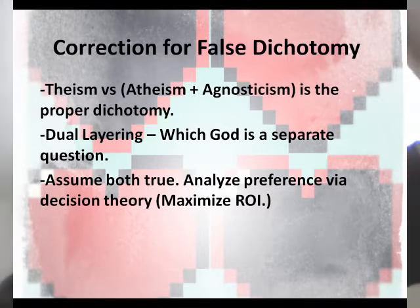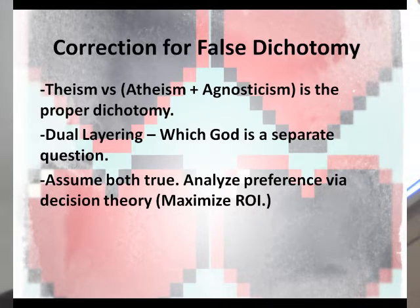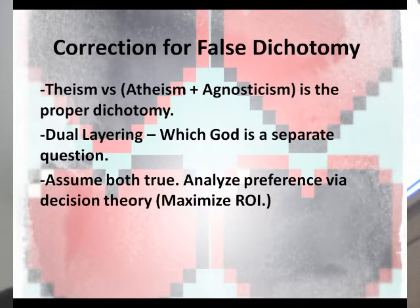The way I'm going to address this is with two layers — a dual-layer approach. First, we ask: which is true — atheism, theism, or agnosticism? We can go about this two ways: either assign a 33% chance to any of them and treat agnosticism as a separate category, or assign a 50% chance to theism and a 50% chance to the combination of atheism and agnosticism.